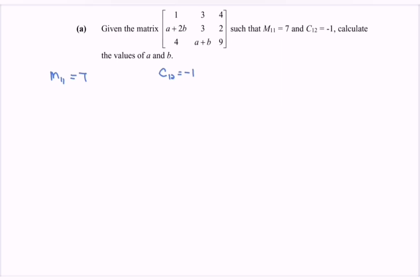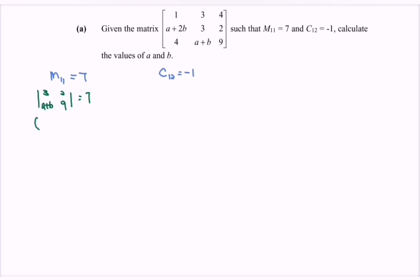First, referring to M11, we have the minor equals to 7. Referring to the matrix, close up row 1 and column 1, so we have 3, 2, A plus B, and 9. So we have 27 minus 2A plus 2B, equals to 7.